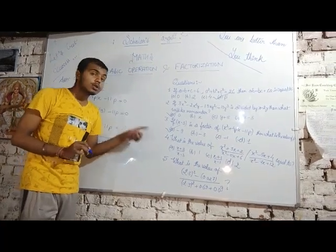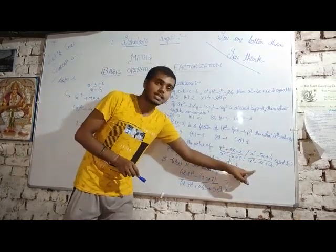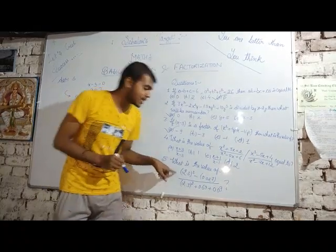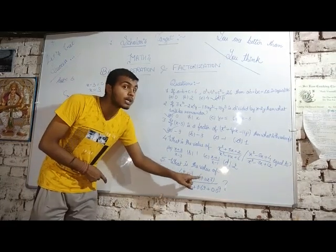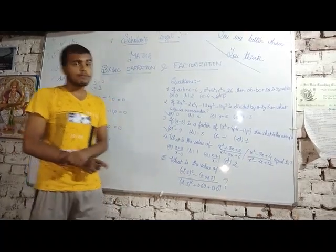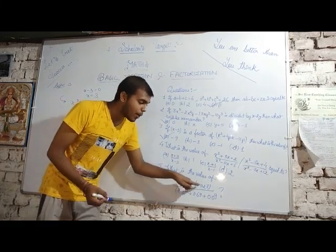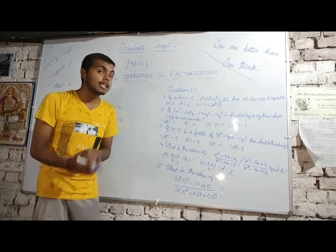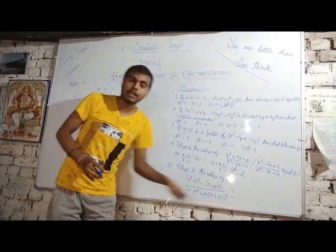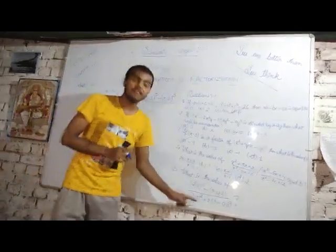Question number 4 and 5 I am leaving for yourself because they are easy — you just need to factorize the terms and cancel them out. For question 5, note that 0.027 is the cube of 0.3. So replace 0.027 with (0.3)³, then apply the a³ - b³ formula and solve. You will definitely get the answer.